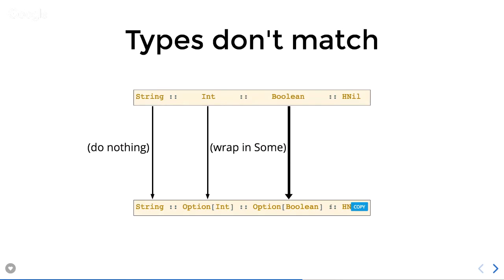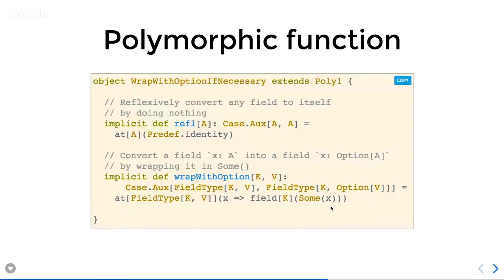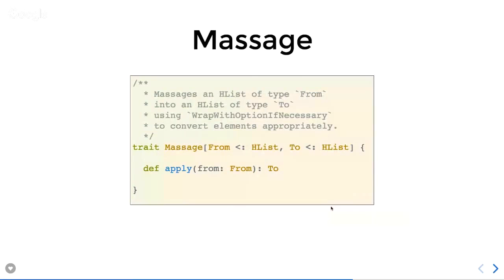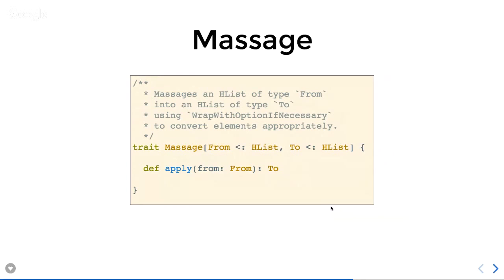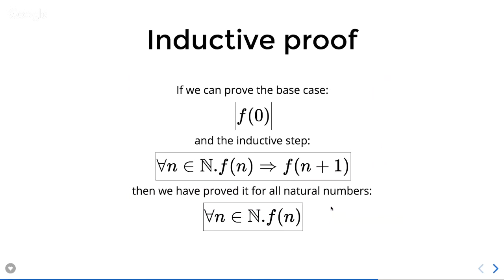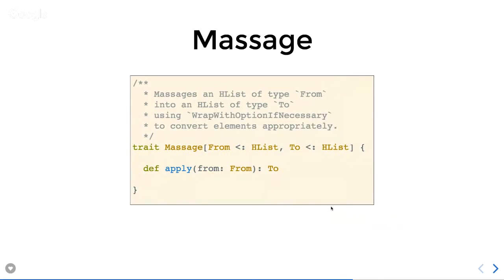How do we actually use this polymorphic function and apply it to an HList? We're going to use it via a new trait called Massage. What this does is take an HList of type From and massage it into an HList of type To, using that polymorphic function to convert elements as it goes through the HList. It's got an apply method so you can pass in an instance of the incoming HList and get back an HList of the appropriate type.